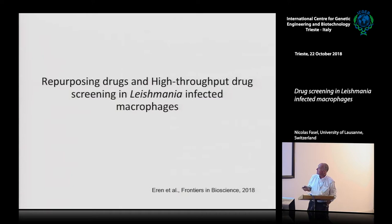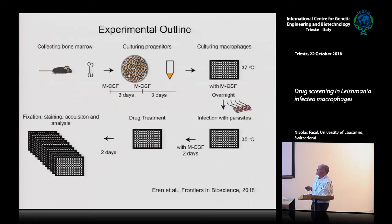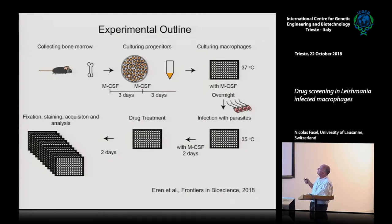We set up a system for intracellular amastigote screening in macrophages. The only manual step was collecting bone marrow and extracting bone marrow-derived macrophages. Everything else was fully automated: macrophages were differentiated with M-CSF, cultured in wells at 37°C, then infected with parasites. We worked with L. guyanensis, which grows better at 30–35°C. The drug was added, then cells were fixed, stained, and data acquired.